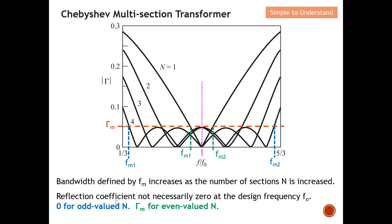The reflection coefficient is not necessarily zero at the design frequency f₀. For odd values of N, the reflection coefficient at the center frequency will be zero. For even values of N — for example N equals two, four, six — the center frequency value equals the maximum reflection coefficient Γ_m. So for odd N (one, three, five, etc.) the center frequency is at zero, and for even N it equals Γ_m.